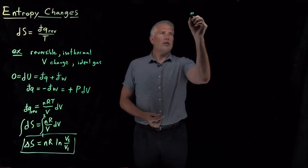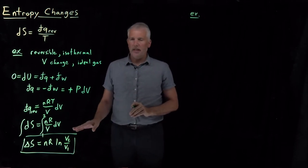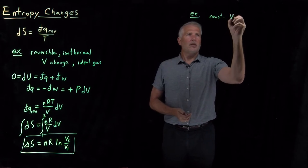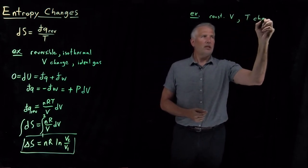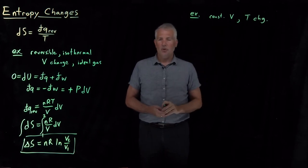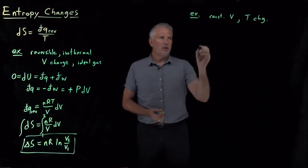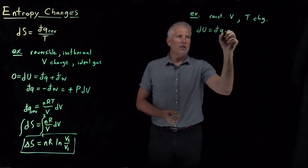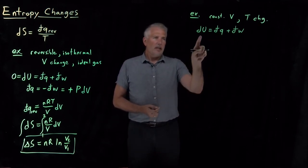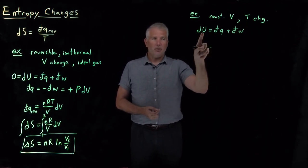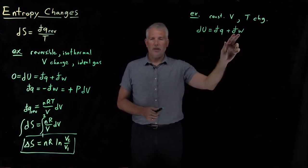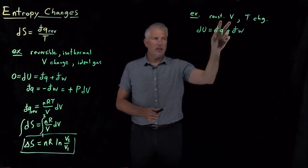Let me give you another example of a process for which we already know something about the heat, but now we can calculate something about entropy. Let's now keep the volume constant but change the temperature — heating something up or cooling something down isochorically without changing the volume. Again, we can go back to the first law. Now dU is not going to be zero, because any time we change the temperature, we change the internal energy. But because we've chosen a constant volume process, the PV work associated with a process whose volume is not changing is zero.